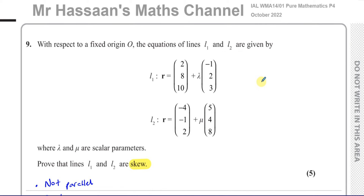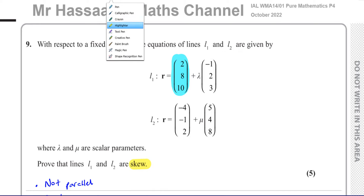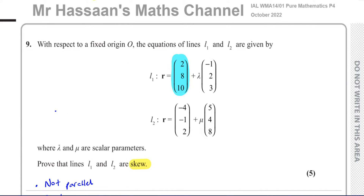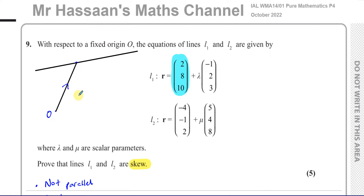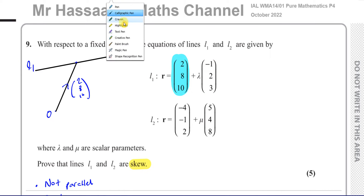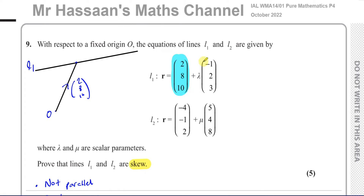The vector equation of a straight line is made up of two parts. The first part comprises the position vector of a point on the line — that's how to get from the origin to the line. For line 1, that would be the vector (2, 8, 10). The second part, before the scalar parameter, is the direction of that line — so (−1, 2, 3) is the direction of line 1.